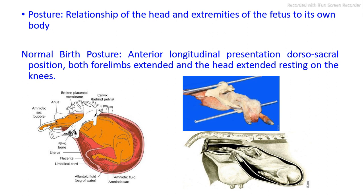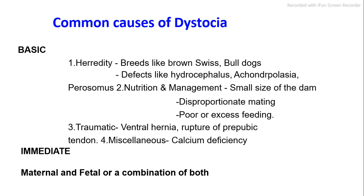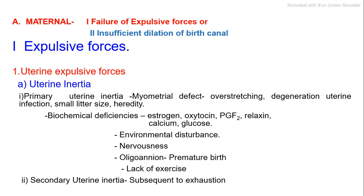Normal birth posture involves both forelimbs extended and the head extended, resting on the knees. Common causes of dystocia: 1. Heredity — breeds like Brown Swiss and bulldogs, and defects like hydrocephalus and achondroplasia. 2. Nutrition and management — small size of the dam, disproportionate mating, poor or excess feeding. 3. Traumatic ventral hernia, rupture of prepubic tendon.